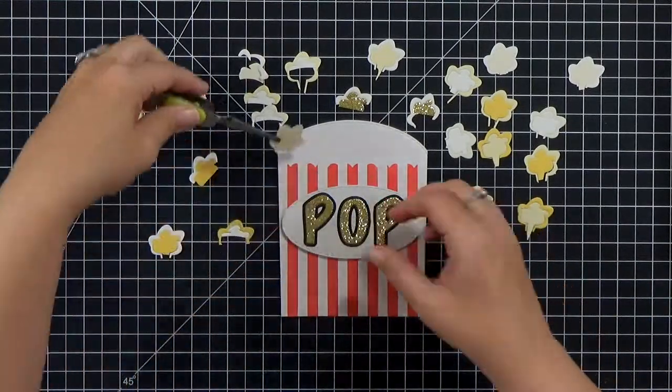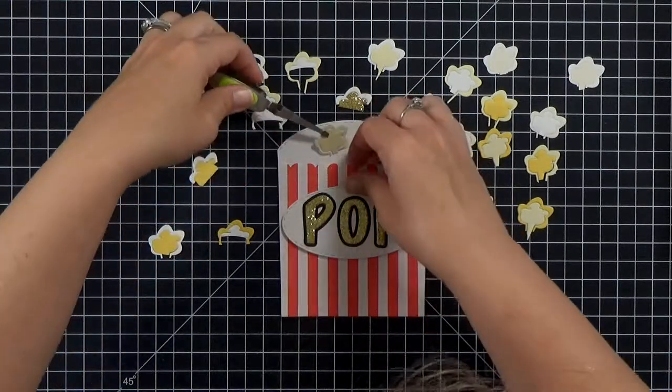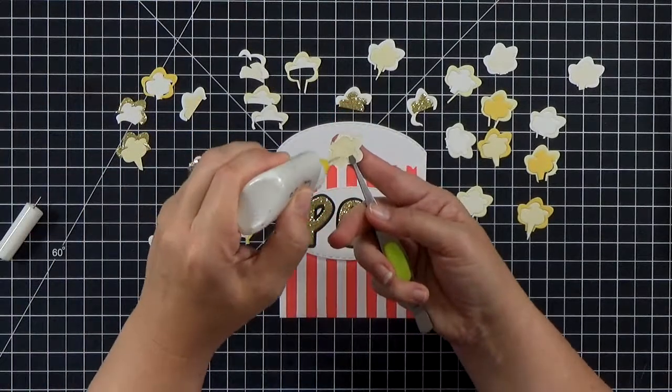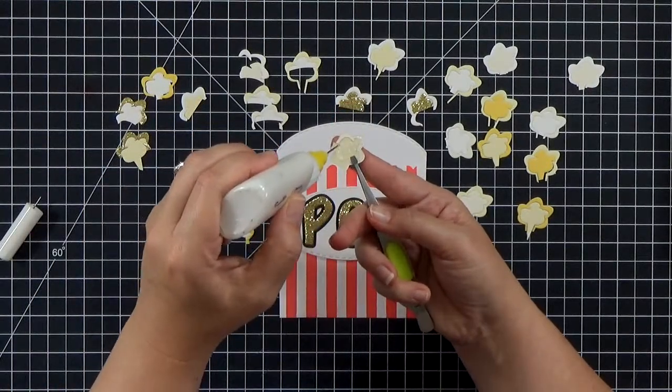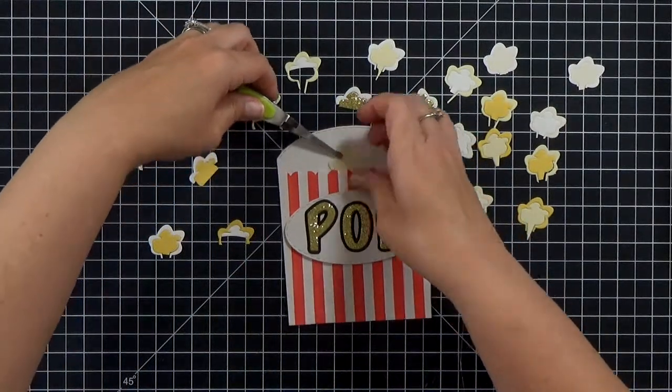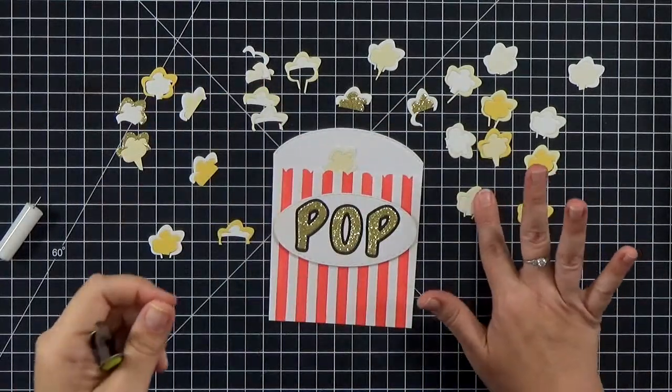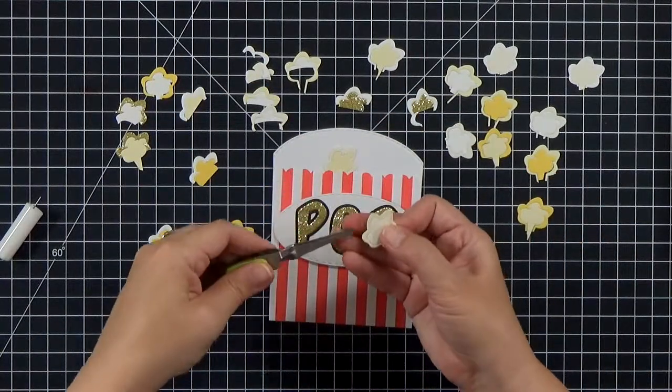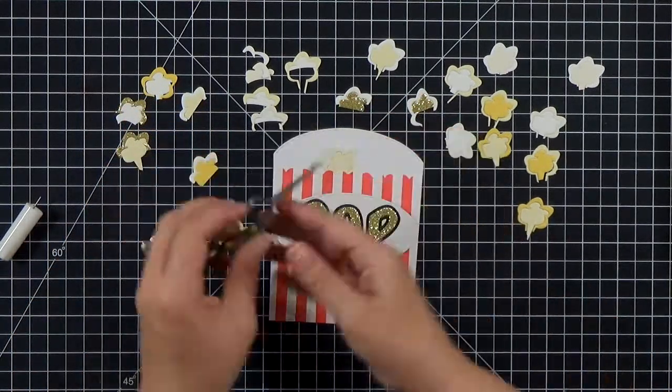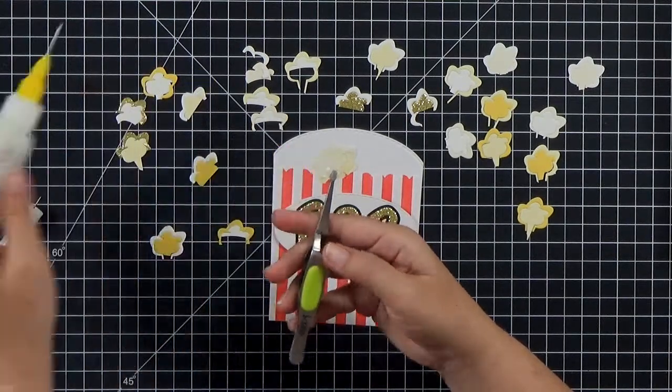So if you don't have this die set, you can just check through your stash. See what you have that looks like popcorn. The speech bubble works perfect for this. And I love that there was an outline and an inside piece there. In fact, you could lose the outline and the inside piece looks like a different shape as well. If you don't have this, maybe clouds, just check around. You might be surprised to see what you have in your stash that you can use in a different way.